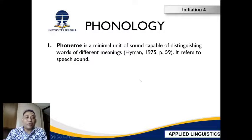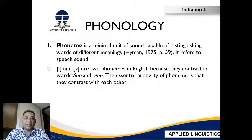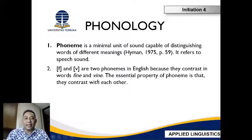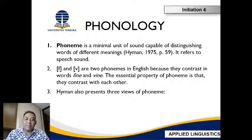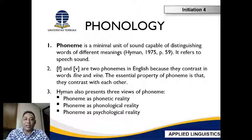Now let's have a look at what's called phonology. In phonology, what is important is the phoneme — the minimal unit of sounds capable of distinguishing words with different meanings. For example, /f/ and /b/ are considered English phonemes because they contrast in the words 'fine' and 'wine.' Hyman also presents three views of phoneme: phoneme as phonetic reality, phoneme as phonological reality, and phoneme as psychological reality.